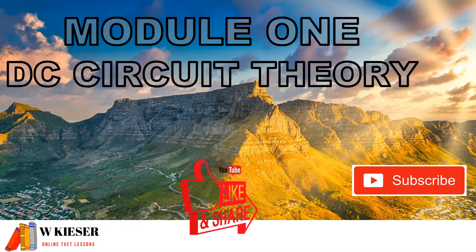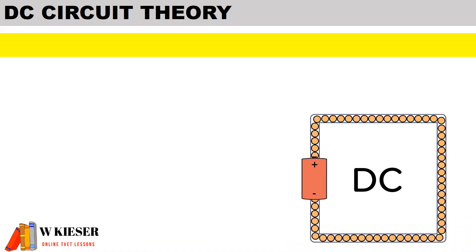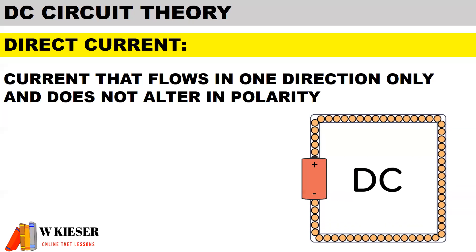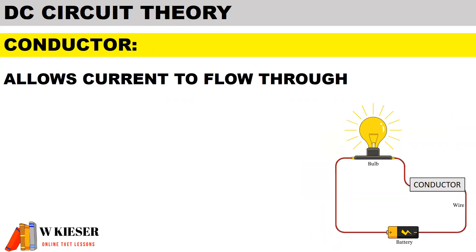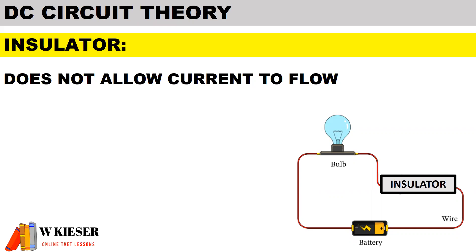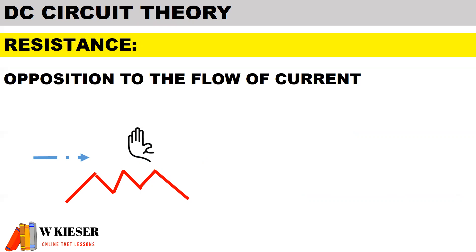For module one, we'll be looking at DC Circuit Theory. There are some definitions we need to know. Direct current is defined as the current that flows in one direction only and does not alter in polarity. A conductor allows current to flow through a circuit — the best relative conductivity is known as silver. An insulator, like glass or porcelain, is defined as not allowing current to flow, and on this circuit you'll see the light bulb is not illuminated.